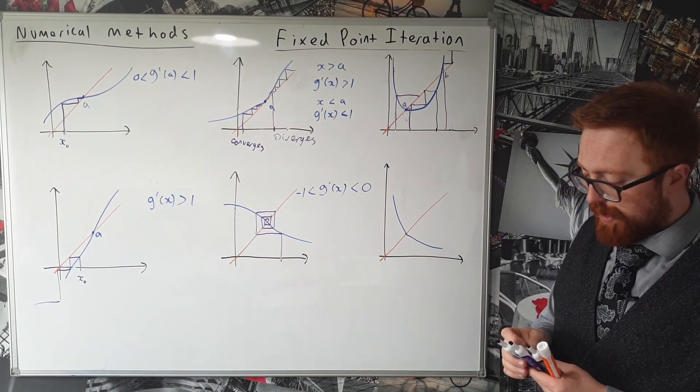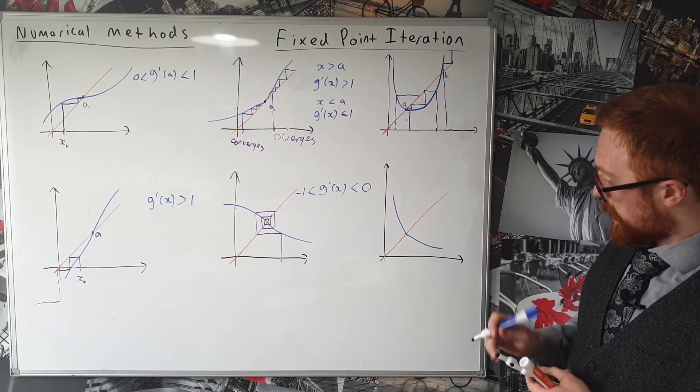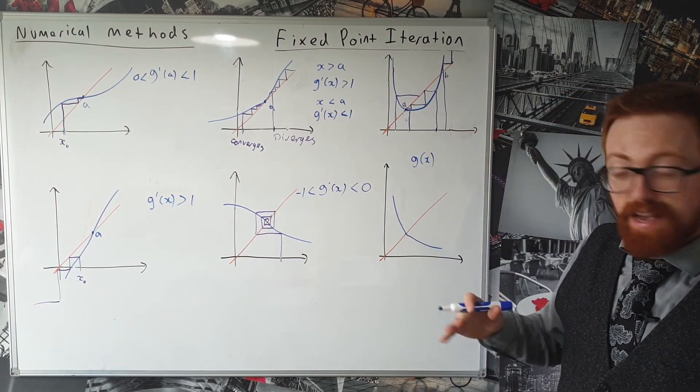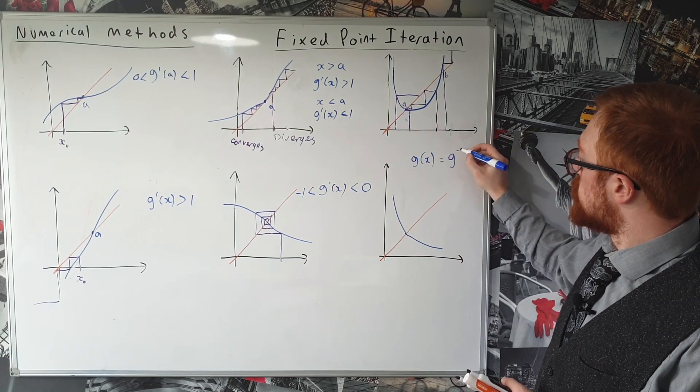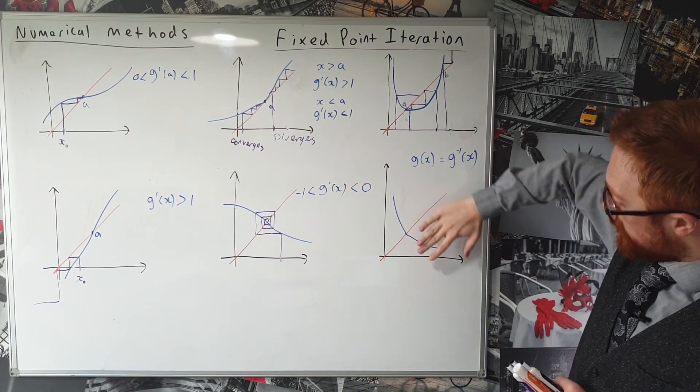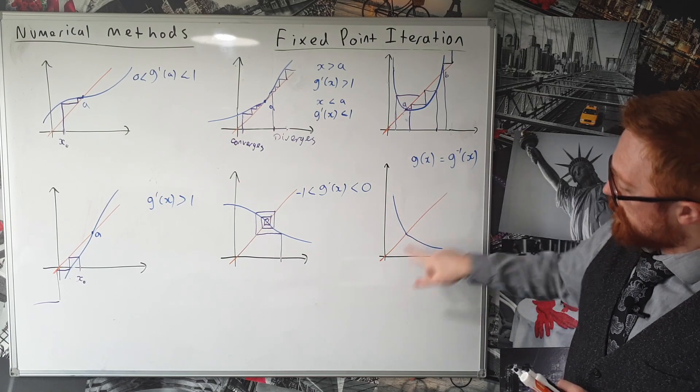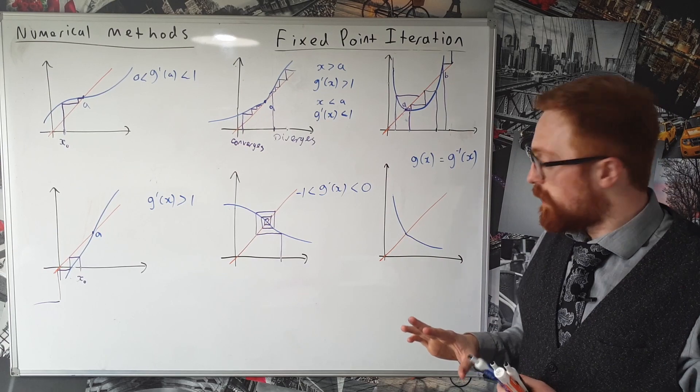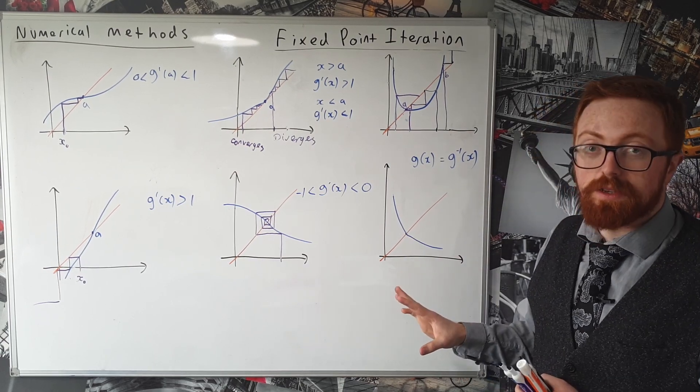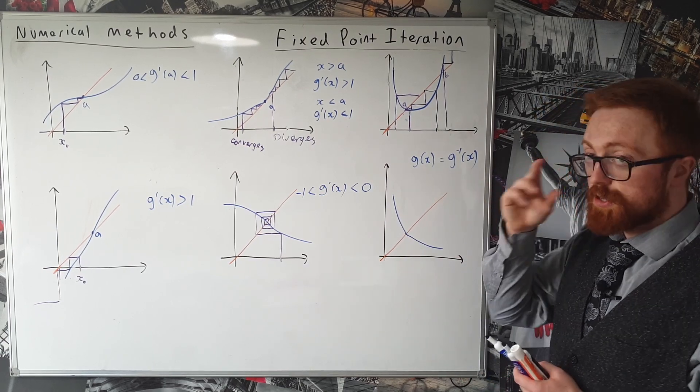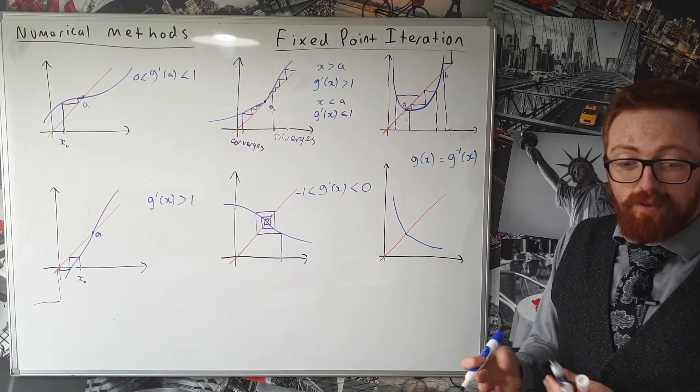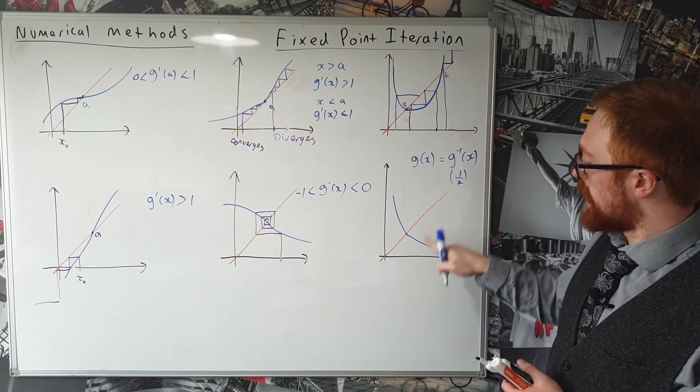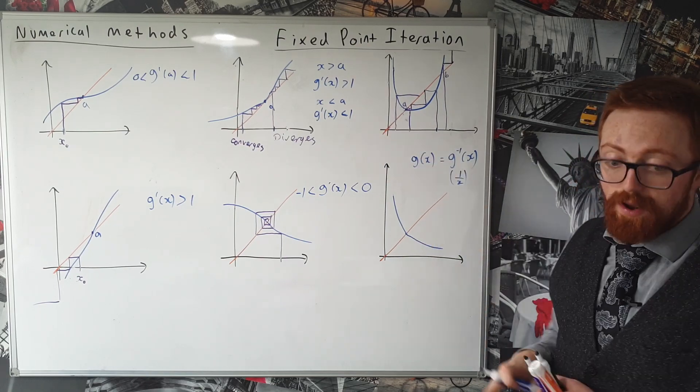Now, this is a special case, and we're in the special case where G of X is a self-inverse. It's the same as G inverse of X, which means it's symmetrical around this line Y equals X. Now, again, I'll just give you a second or two to see if you can predict what's going to happen if we're trying to use fixed-point iteration on a function like this. A really common example is 1 over X. If you try and use 1 over X or fixed-point iteration on 1 over X, it won't work.